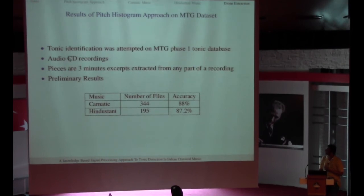For this we wanted a small amount of data and we used the database set up by MTG to do their tonic work on. They had extracted three-minute excerpts from any part of a recording for a large number of pieces. For example, there were 344 for Carnatic and 194 for Hindustani and these are the accuracy percentages I got. Thing with Hindustani is actually it's almost close to 100% for vocal music but given that I'm using entropy measures and there were also sitar and sarod recordings, I went wrong at those places. So this is something we need to work at.